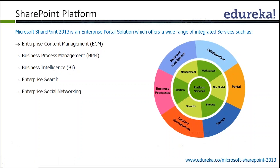The graphical image shows at the center a platform service — which is what we call SharePoint — with management workspaces, site models, storage, and security. SharePoint is always considered to be many products bundled into one. We have enterprise content management, business process management, business intelligence, enterprise search, and enterprise social networking as the main core components. Organizations using SharePoint could be using it for either one of these, a couple of them, or all of them.